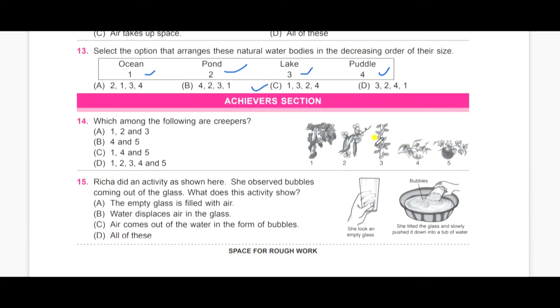Now, fourteenth one. Which among the following are creepers? You can see the picture. Okay, now we will see the options. A, one, two, and three. B, four, and five. C, one, four, and five. And D, one, two, three, four, and five. So, the answer is B, four, and five. Four and five are creepers.